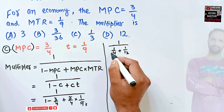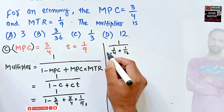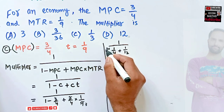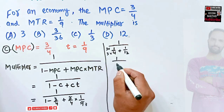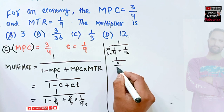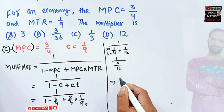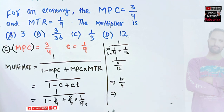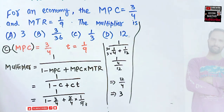Making the denominator the same: 1/4 becomes 3/12, so the denominator is 3/12 plus 1/12 equals 4/12, which is 1/3. Therefore the multiplier is 1 divided by 1/3, which equals 3. The multiplier for this economy is 3.